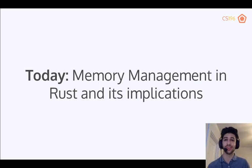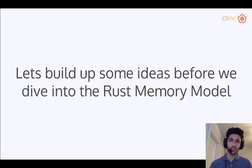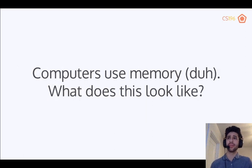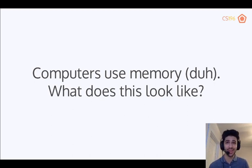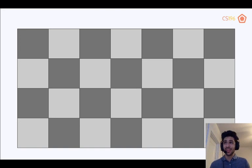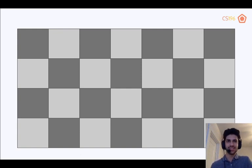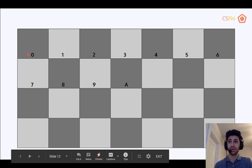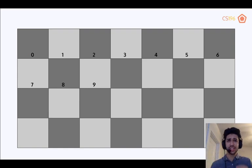Before we talk about the Rust memory model, we need to build up some prerequisite ideas. First, computers use memory. When you write in a high-level programming language like Python, it's easy to forget what's going on under the hood, but Rust makes sure you can't forget that. Memory can be represented as blocks that you can place information into, and these blocks are labeled with numbers — block zero, one, two, three, and so on.